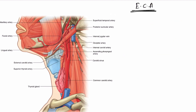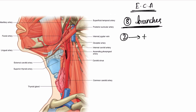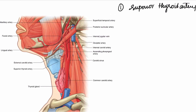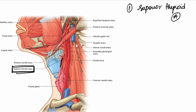The external carotid artery gives rise to eight branches — two are terminal branches and six are major branches. The first branch is the superior thyroid artery, which descends down and supplies the superior pole of the thyroid gland. It arises from the anterior aspect of the external carotid artery.